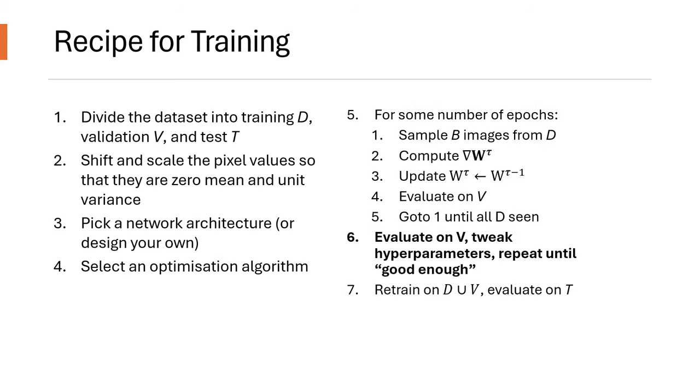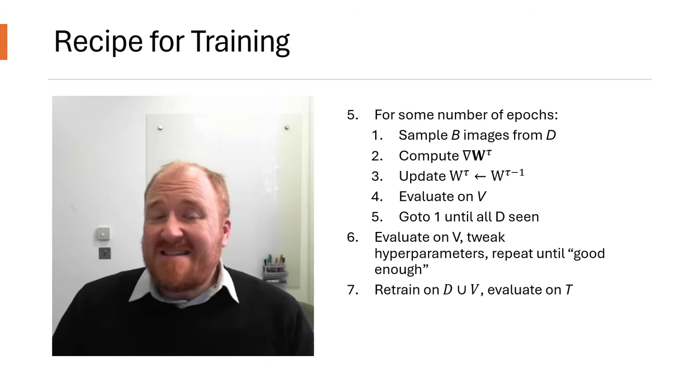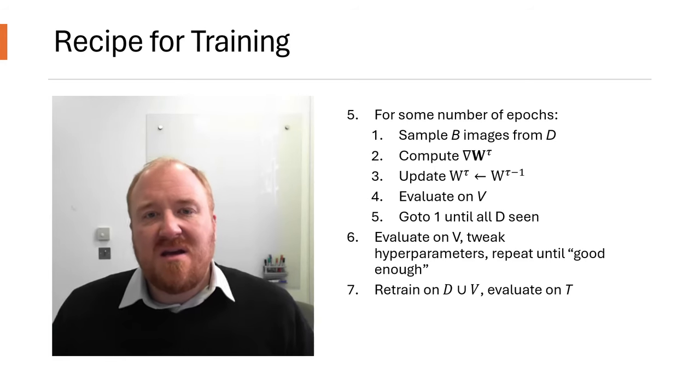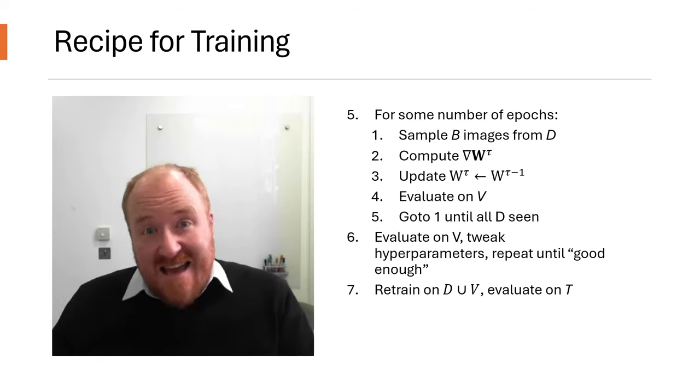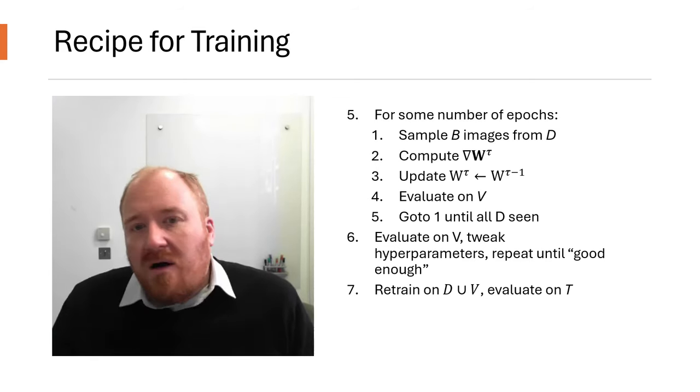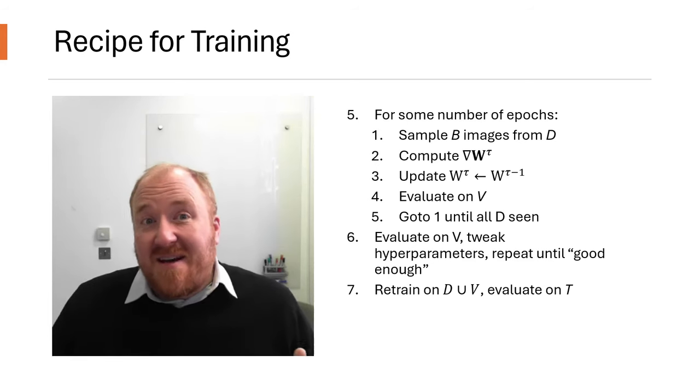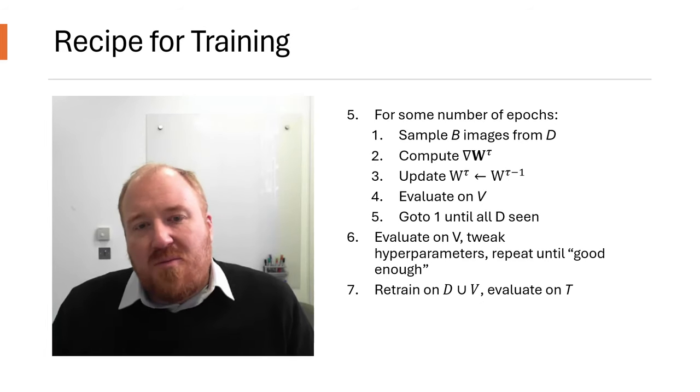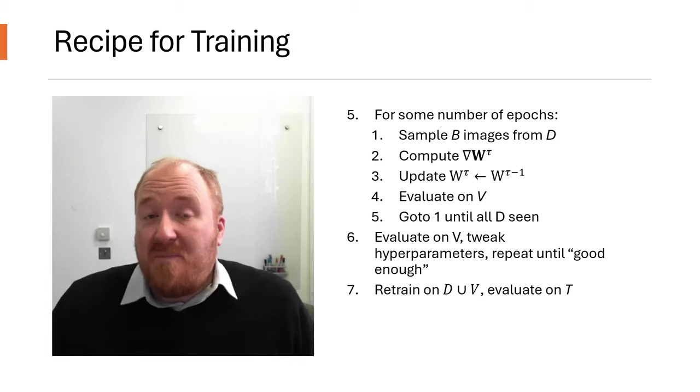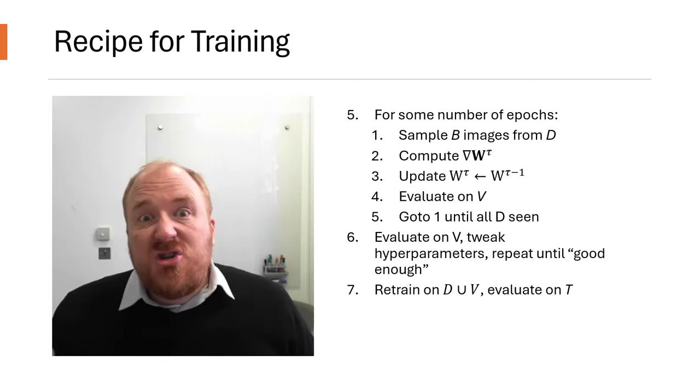Finally, once we are happy with our model, we retrain on the training and validation data together and evaluate on the test data. It is tempting to go back to step 5 after step 7. Don't. If you do, you are now using the test set as your validation set. There's nothing inherently wrong with this, but it does mean that the test set has stopped being a useful measure of how well your model generalizes, and you'll need to find something else to measure that. Optimizing hyperparameters on the test set is how you get models that have excellent results on paper, but fail miserably at real-world problems. Don't do it!